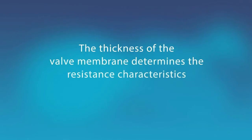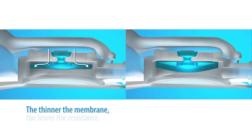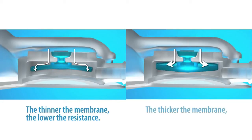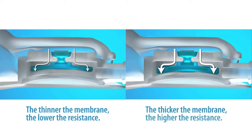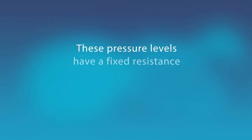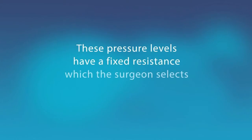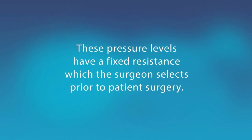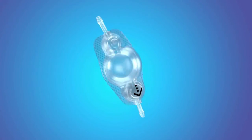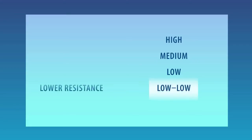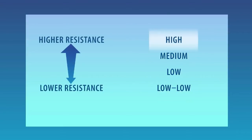The thickness of the valve membrane determines the resistance characteristics of the valve. The thinner the membrane, the lower the valve resistance; the thicker the membrane, the higher the valve resistance. These pressure levels have a fixed resistance, which the surgeon selects prior to patient surgery. The contoured valve is available in four fixed pressure levels: low-low, low, medium, and high.